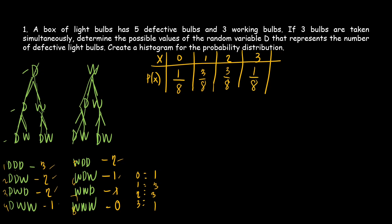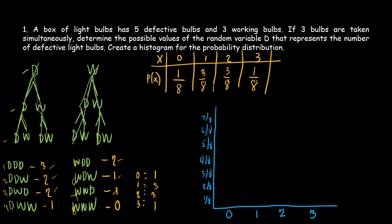Now the next thing we're going to do is create a histogram. On the x-axis we have 0, 1, 2, and 3. On the y-axis we mark 1/8 and 2/8. For D equals 0, the bar height is 1/8. For D equals 1, the bar height is 3/8. For D equals 2, the bar height is also 3/8. And for D equals 3, the bar height is 1/8.